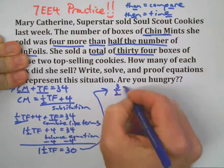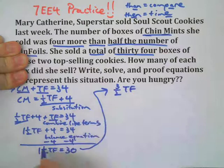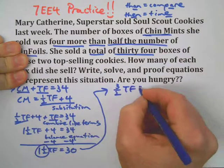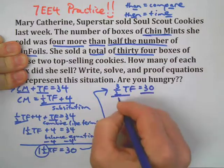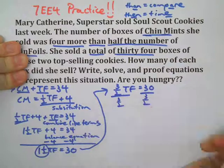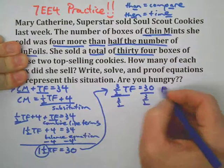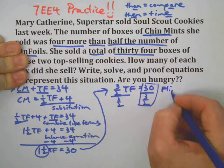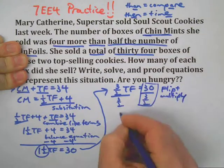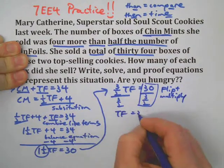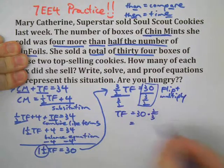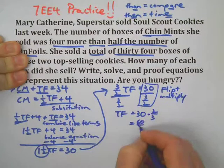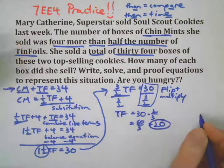I changed the one and a half to three-halves — you'll see why in just a second. Finally, we're going to divide both sides by the coefficient, which is three-halves. When we have fraction division like this, flip and multiply — that's a separate video, check that one out. So the number of boxes of Tin Foils is 30 times two-thirds. Two-thirds of 30: 60 over 3 equals 20.